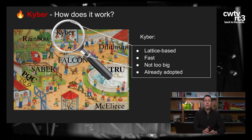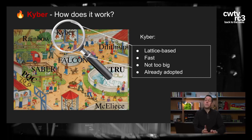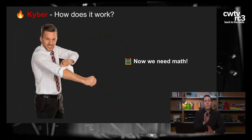Warum schauen wir uns genau Kyber an? Es ist sehr schnell und die öffentlichen und privaten Schlüssel sind nicht zu groß – das heißt, man kann sie in der echten Welt sogar benutzen. Das ist nicht bei allen Post-Quantum-Verfahren der Fall. Es ist zwar noch nicht standardisiert, aber es ist schon teilweise eine Option in industriellen Anwendungsfällen. Es ist ein lattice-basiertes Schema.